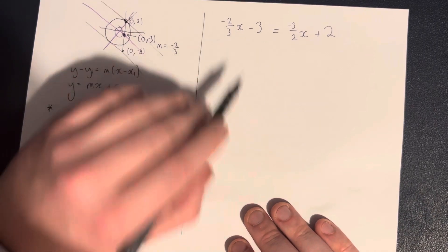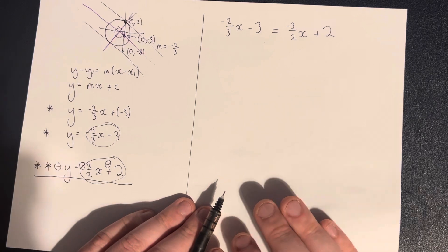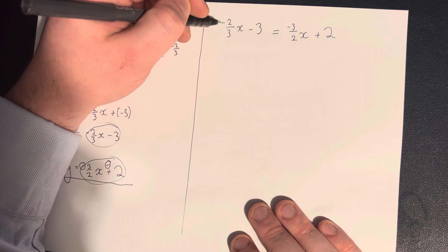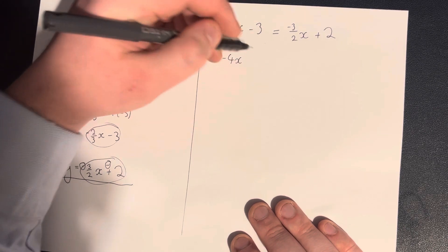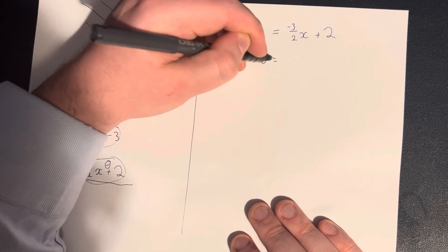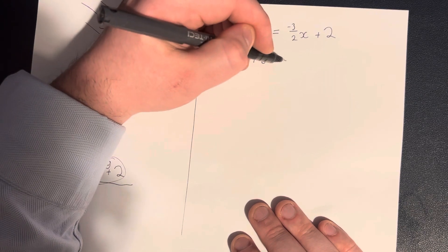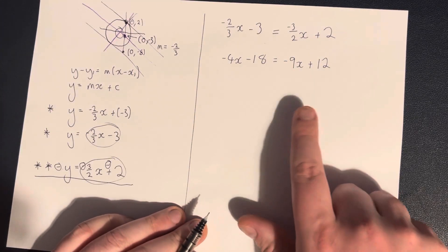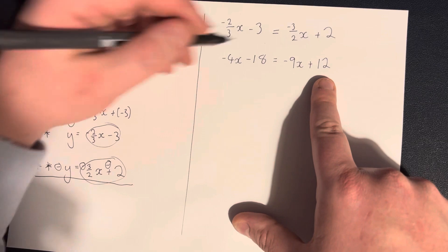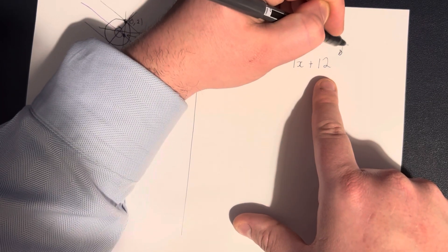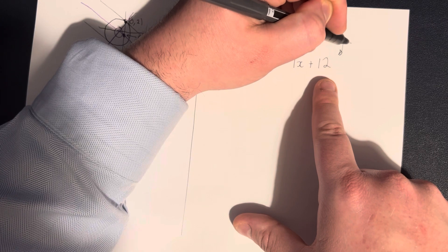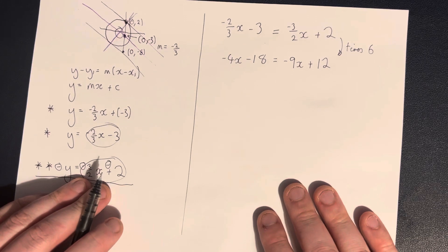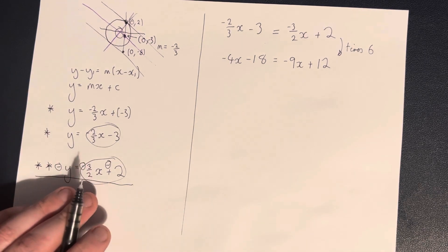Then we can do some algebra on this. I could multiply everything by 6. That's probably the nicest thing to do here. So multiplying the first thing by 6 will give me minus 4x. Multiplying this thing here by 6 gives me minus 18. Multiplying this thing here by 6 will give me plus 9x. Multiplying this thing here by 6 will give me 12. Just to show you what I did, I multiplied it by 6 times 6. I do everything I can to avoid using that cross symbol for the multiply.